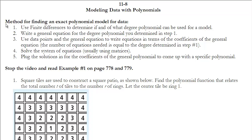When we do it, we're going to be coming up with an exact model for the data. The method I'm going to use involves five steps, illustrated here. I'll go through Example 1 and highlight these five steps as we do the whole problem. When you're done, you should have a specific polynomial with coefficients for the variables such that it models the data.